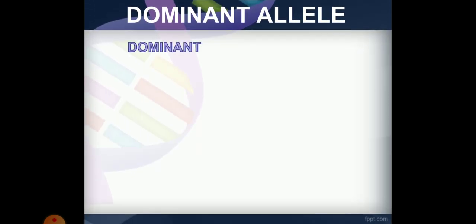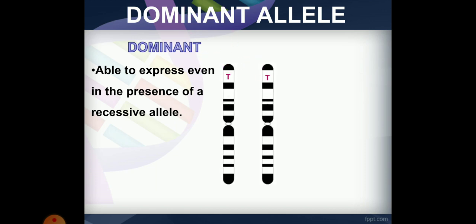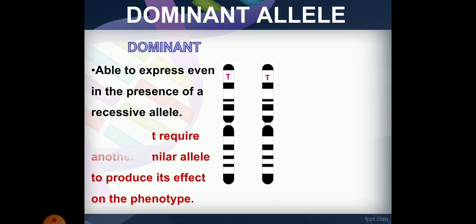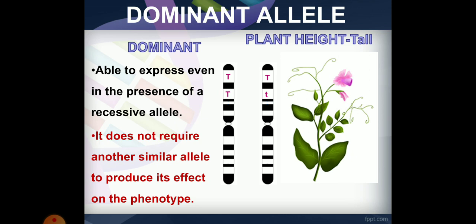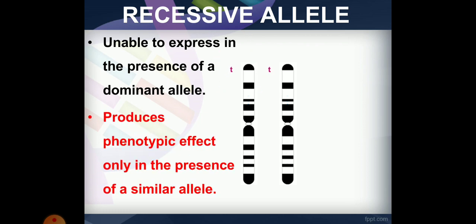The dominant allele can be expressed even in the presence of a recessive allele. For example, T represents the tall phenotype. It does not require another similar allele to produce its effect. The recessive allele produces a phenotypic effect only when present with another similar recessive allele.